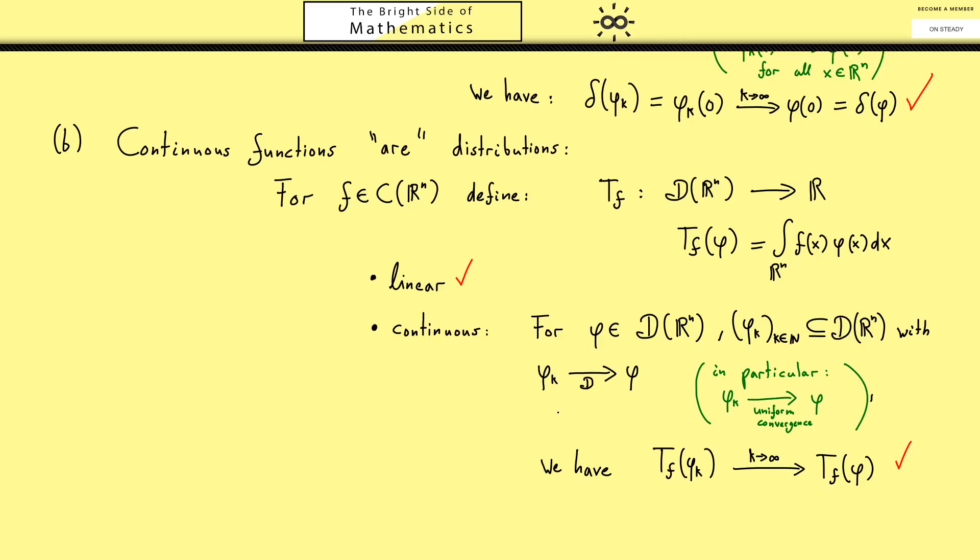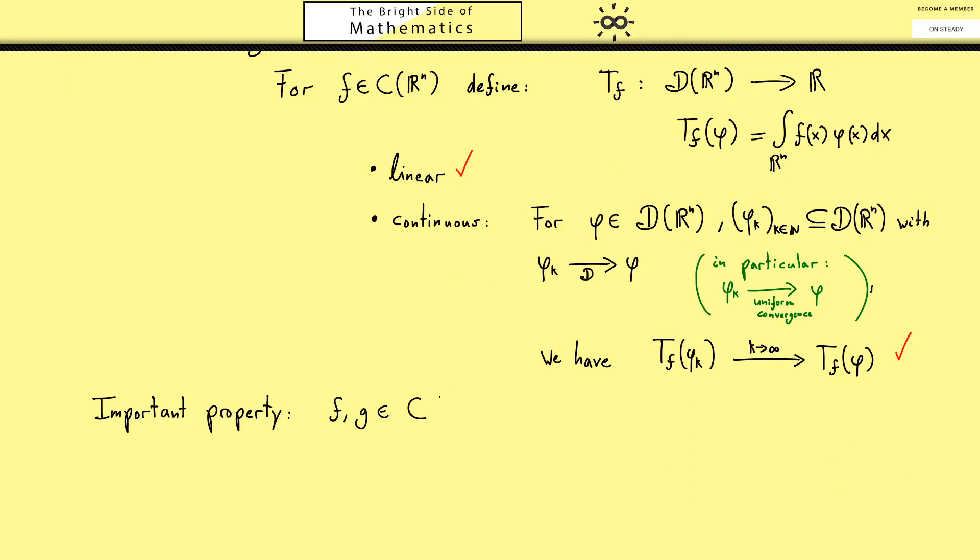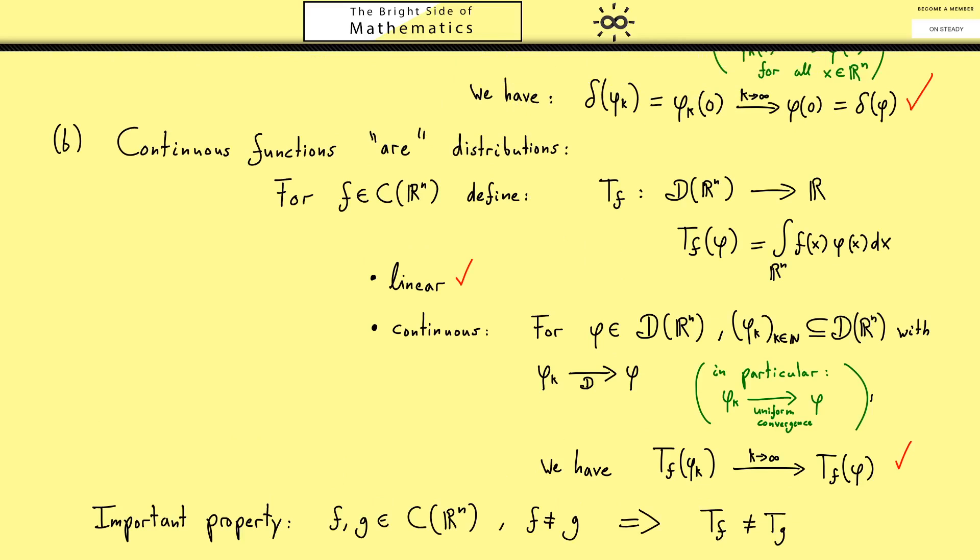Still there is one important property I want to state at the end now. If I choose two different continuous functions, then also the associated distributions are also different. This is something you should think about, but it's not hard to see. And the same way one can see here: if you have all the numbers that can come out from continuous function f, so you know what happens if you put in all the test functions phi, then you can reconstruct the continuous function f. Of course this is what we want. From the distribution we get back our normal continuous function. Of course this is what we wanted from the beginning. Now we can identify continuous functions with some distributions and we haven't lost anything. On the contrary, we gain something new, namely the delta distribution.